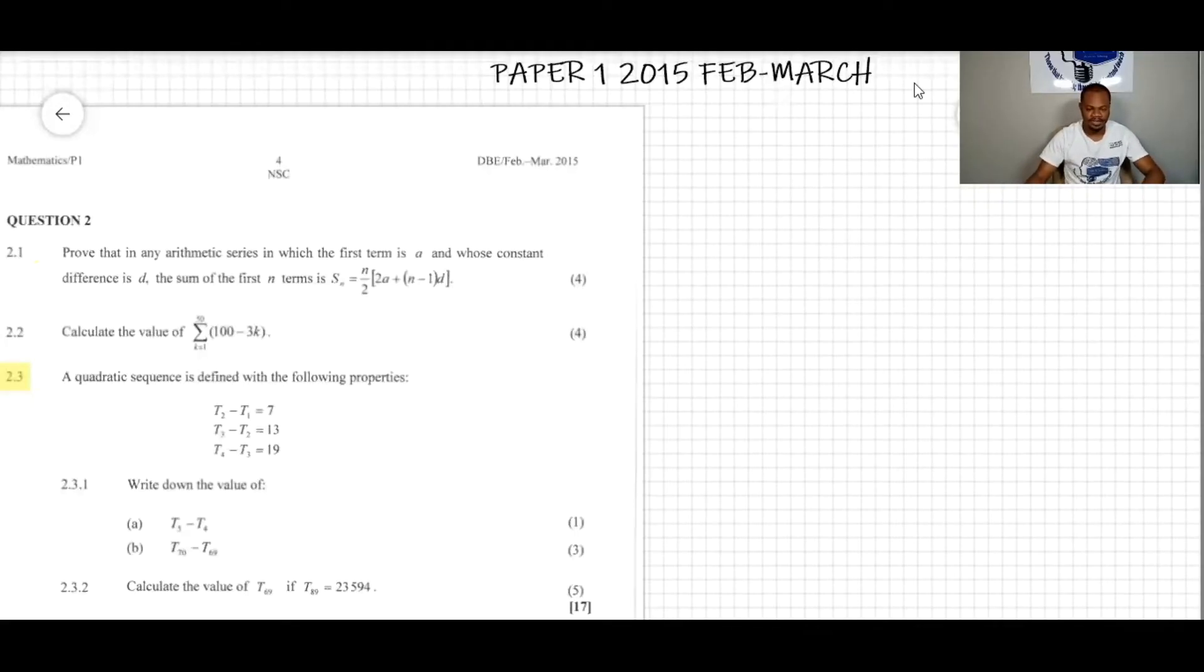The question here says an equality sequence is defined with the following properties: T2 minus T1 equals 7, T3 minus T2 equals 13, and so on. Question 2.3.1 says write down the value of T5 and T negative 4.